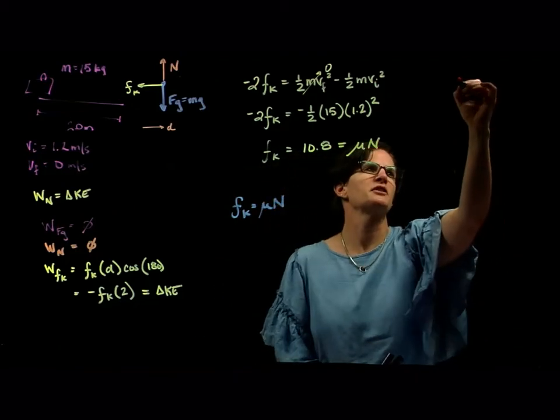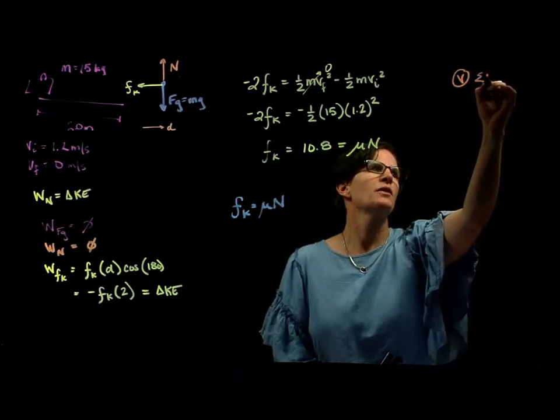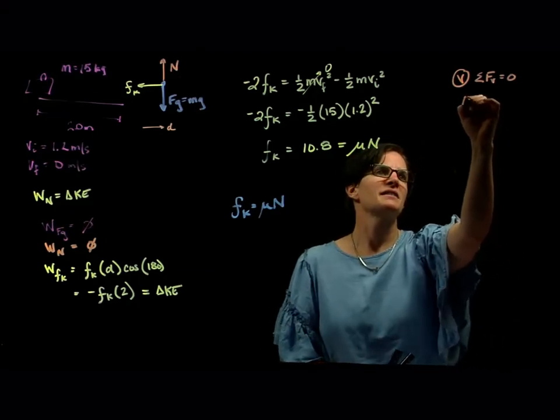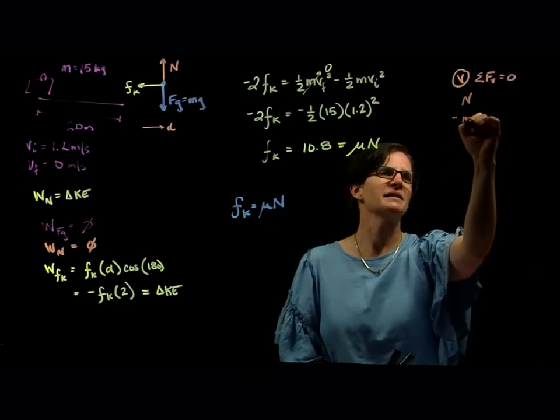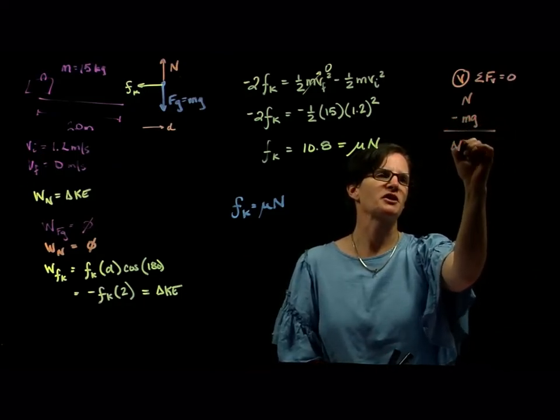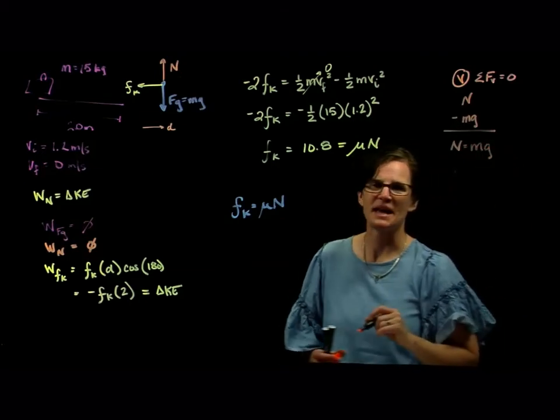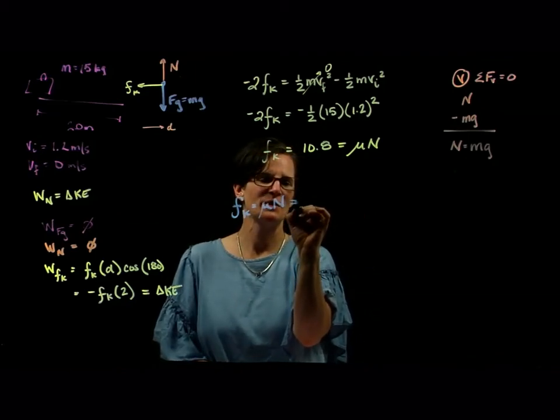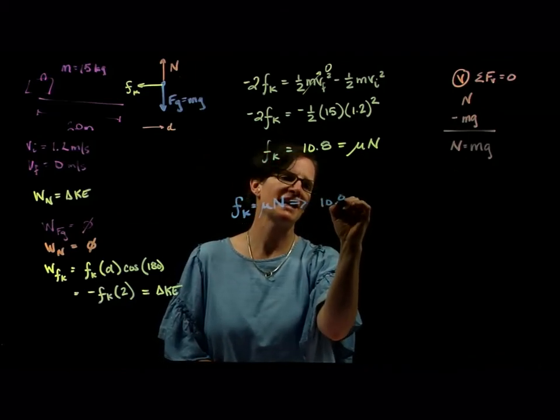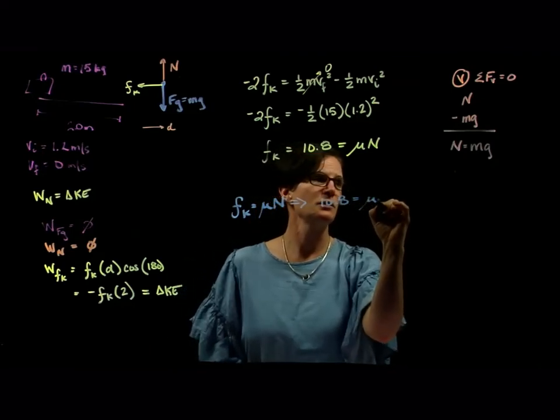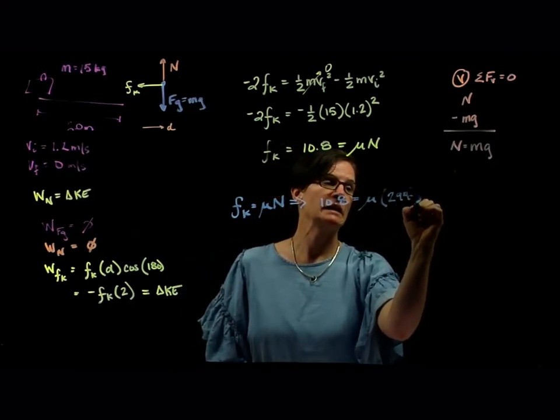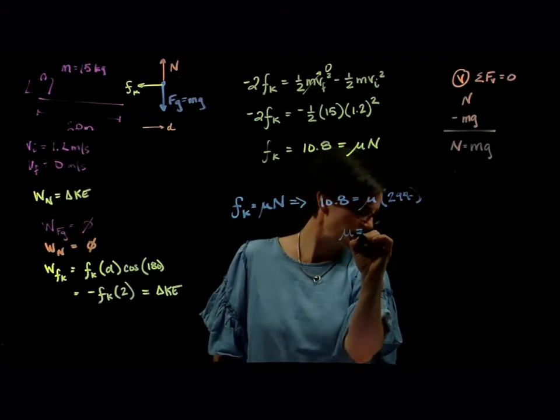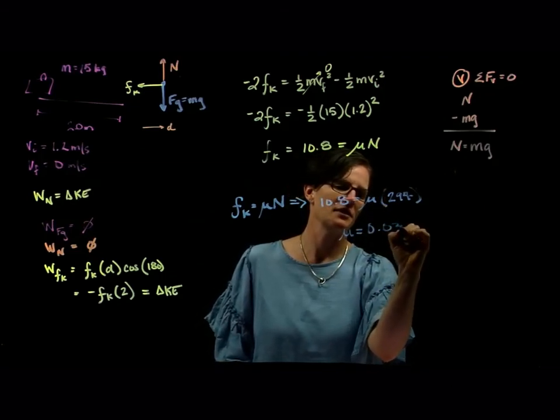Now n is in the vertical dimension, and so we'll start with that vertical dimension of force analysis. We know that the sum of the forces vertical is equal to zero since the object is not changing its motion up or down. That's the normal force minus the force of gravity acting in the opposite direction. So we see that n is equal to mg. So using that in our friction relationship, we have 10.8 is equal to mu times 147, the mass of 15 times 9.8. And we discover that mu is equal to 0.037.